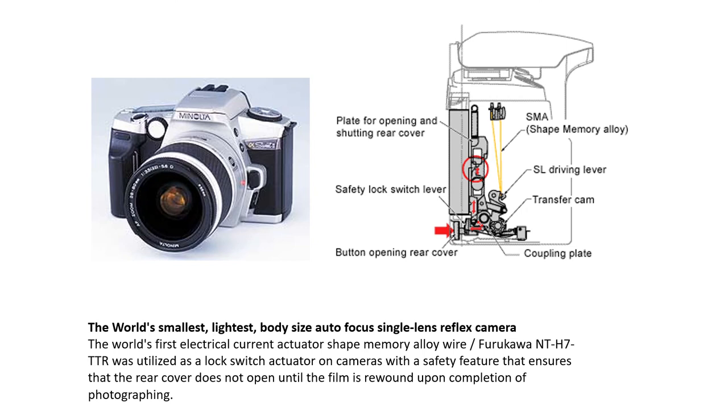The world's first electrical current actuator shape memory alloy wire, Furukawa NT-H7 TTR, was utilized as a lock switch actuator on cameras with a safety feature that ensures the rear cover does not open until the film is rewound upon completion of photography. This was the world's smallest, lightest body size autofocus single lens reflex camera.